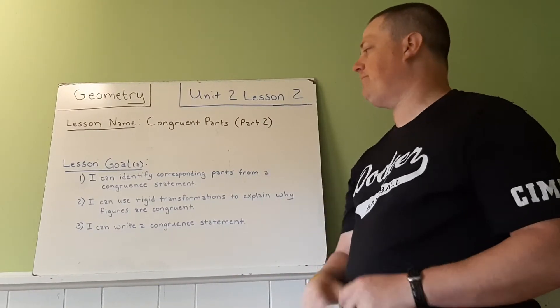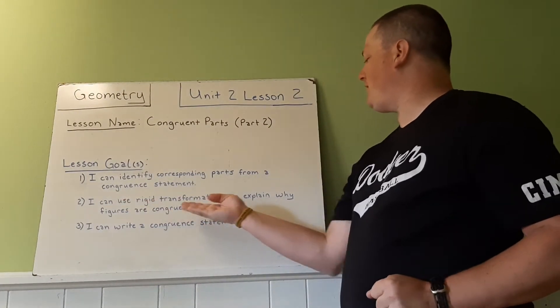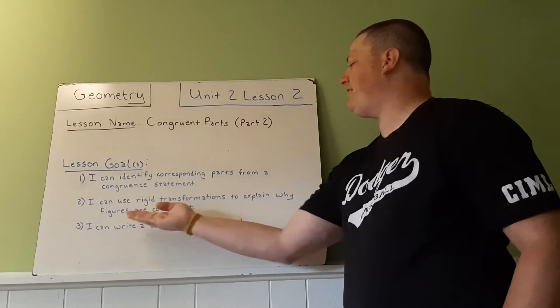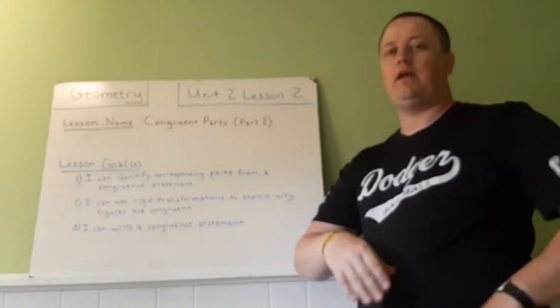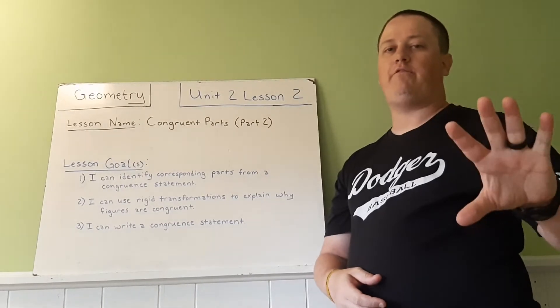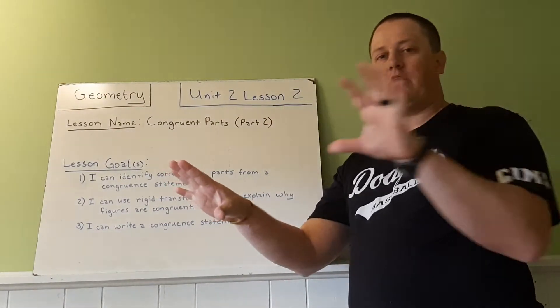always looking at the picture. I can use rigid transformations to explain why figures are congruent. So if you have a congruent statement, you should be able to take one figure and move it onto the other using some rigid transformations to show that they overlap onto each other perfectly.